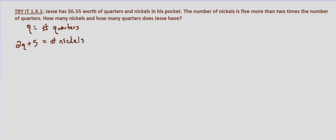We also know that 0.25 times the number of quarters plus 0.05 times the number of nickels, which in this case is 2Q + 5, equals the total of $6.55.